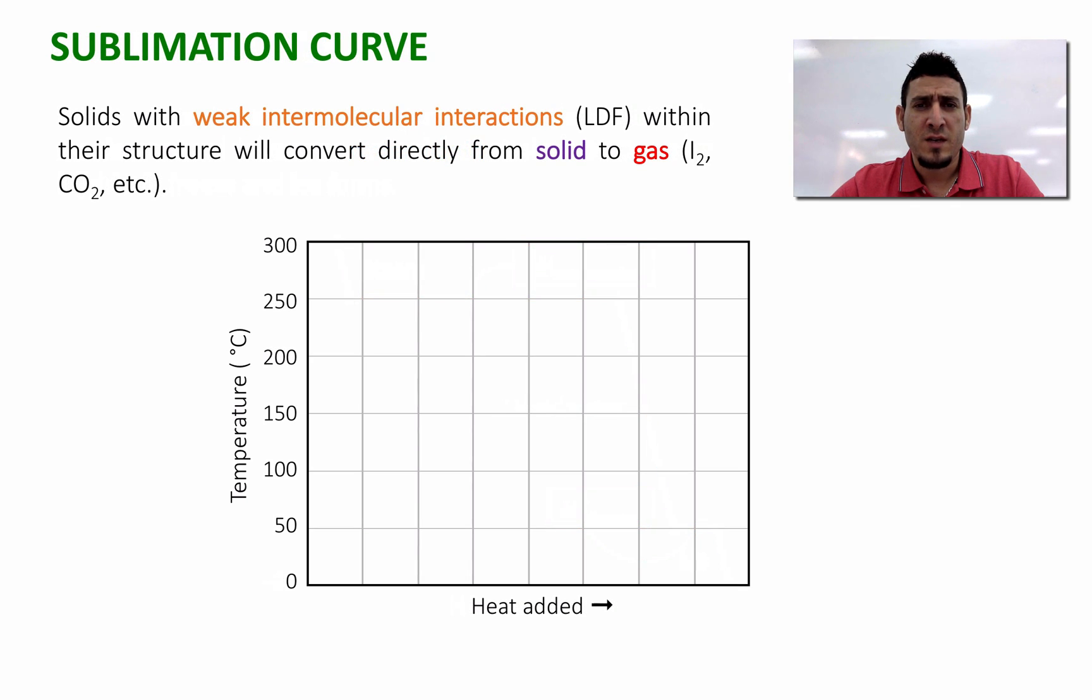Let's move on now to discuss the sublimation curve. Solids with weak intermolecular interactions, usually London dispersion force, within their structure will convert directly from solid to gas when heated. An example is iodine or carbon dioxide. The heating curve for iodine will look like this. We can see that solid when heated converts right away to gas. From this curve we can know the sublimation point which is 185 and also we can know the enthalpy of sublimation.